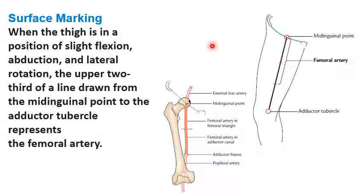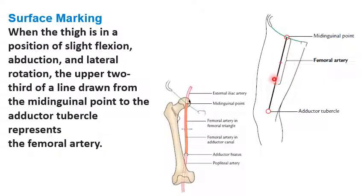The surface marking of the femoral artery is done with the thigh slightly flexed, abducted, and laterally rotated so that the anteromedial aspect of the thigh is visible. A line is drawn from the mid-inguinal point to the adductor tubercle. The upper two-thirds of this imaginary line represents the femoral artery, and the lower one-third represents the popliteal artery.